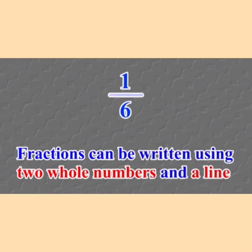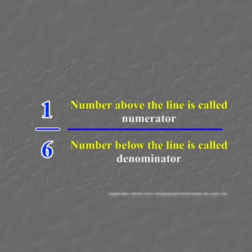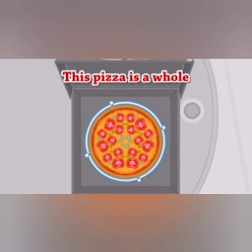A fraction can be written using two whole numbers and a line. We draw the line between the two whole numbers. For example, one upon six. The number on top of the line we call the numerator, and the number below we call the denominator. So one is the numerator and six is the denominator. This is a pizza — this is a whole pizza.